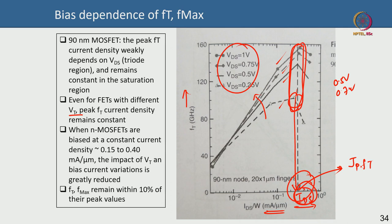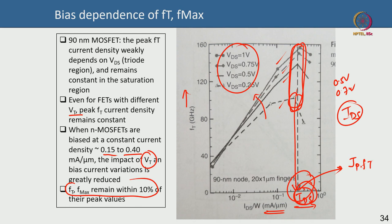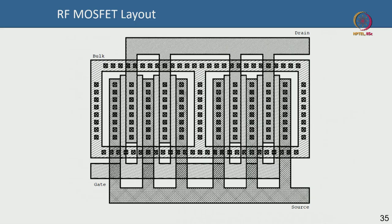Even if your threshold voltage is 0.5 V or 0.7 V, as long as the drain current density is fixed you get the same peak FT—it is amazing. That peak current density is typically around 0.15 to 0.4 mA per micrometer of gate width. You bias the device at a fixed IDS to get constant circuit performance such as FT and fmax, which will remain within 10% of the peak value. That is why RF circuit designers use constant current density as a design parameter.